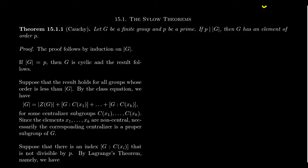If the order of G is 1, this is vacuously true. If the order of G is prime, the only such groups are cyclic, and cyclic groups have a unique subgroup for every order — in particular a subgroup of order P generated by an element of order P. So let's assume composite order and suppose the result holds for all groups whose order is less than G — that's our induction hypothesis. The basis of the proof uses induction plus the class equation.